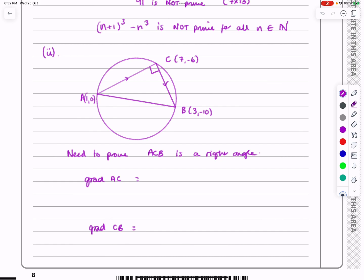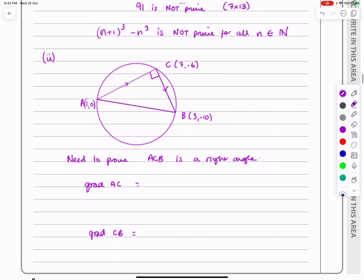So gradient of AC is (y₂ - y₁) over (x₂ - x₁), or in other words, -6 minus 0, all over 7 minus 1, which is -1.